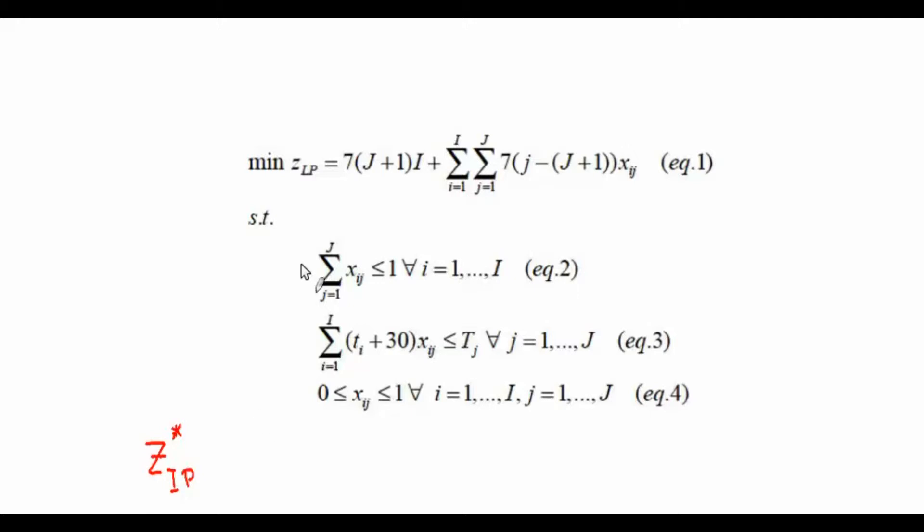And the optimal objective function for this linear program as Z star LP. The question asks what do we know must be true about the relationship between Z star IP and Z star LP and why is this useful?